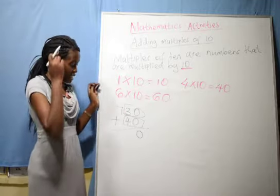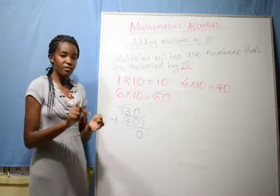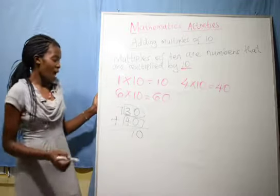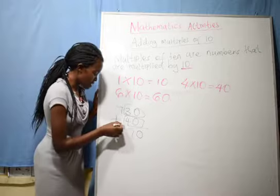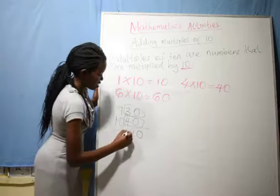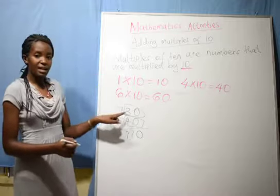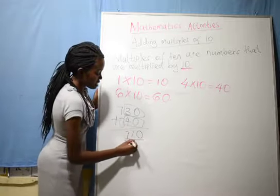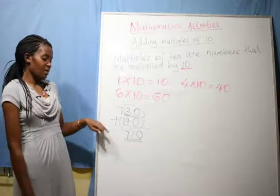We count 3, 4, 5, 6, 7. We get 7. I add 7 plus 0, we get 7. Now, 730 plus 40 is the same as 770. Good, that is our first example.